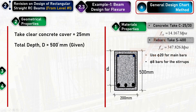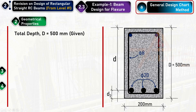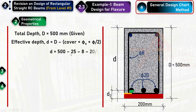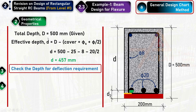The total beam depth is given as 500 mm. The effective depth is the distance from the top compression fiber to the centroid of the tension reinforcement. It equals total depth minus the effective cover, where effective cover = clear cover + stirrup diameter + main bar diameter / 2. This gives an effective depth of 447.5 mm, approximately 448 mm.